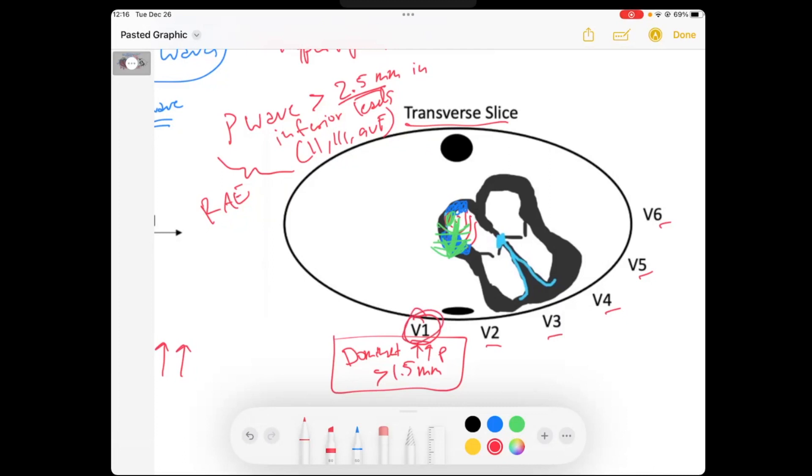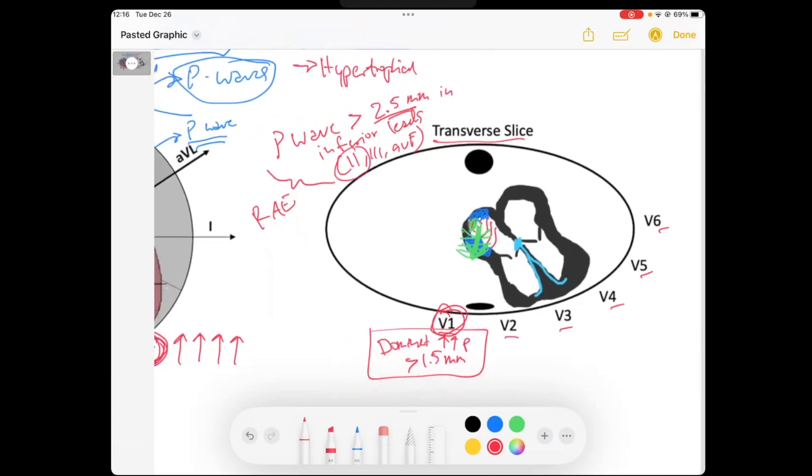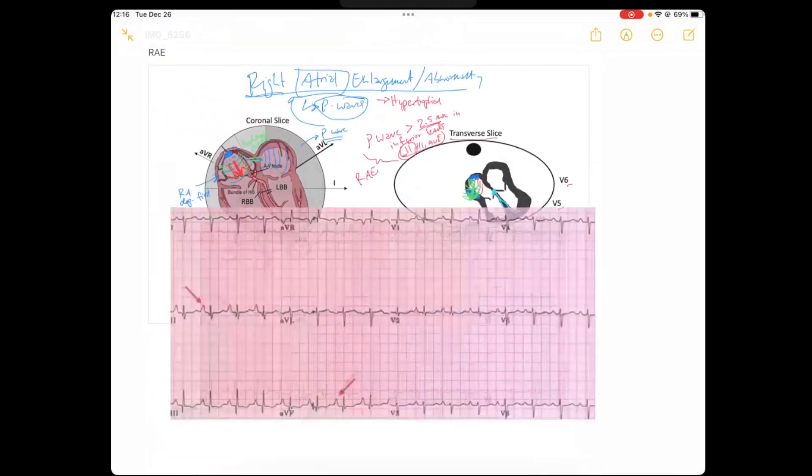So we can look at V1, and we can look at lead 2, 3, or AVF for very positive deflections on really the initial part of our P-wave to see right atrial enlargement. So let's take a look at an EKG.